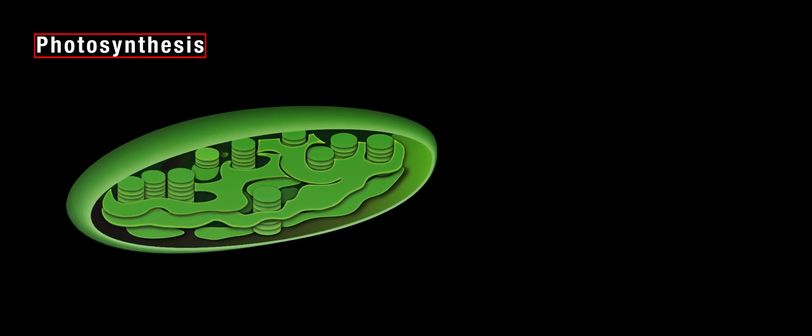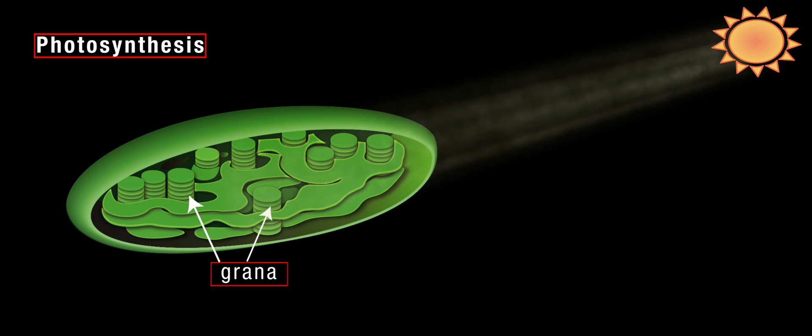Within the chloroplasts are circular stacks of disks called grana. Grana act as solar cells and absorb the light energy radiated from the sun. This energy is used through a series of complex reactions to combine carbon dioxide and water to form glucose and oxygen.